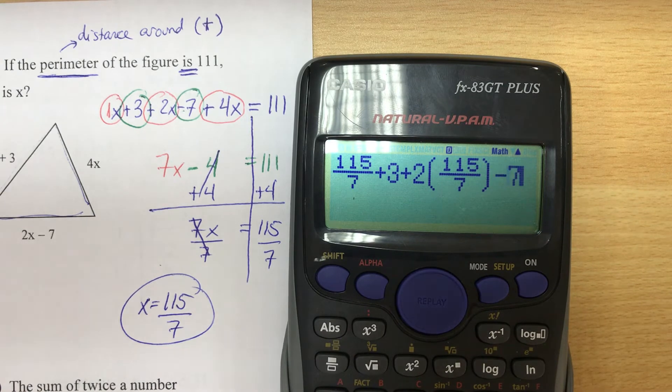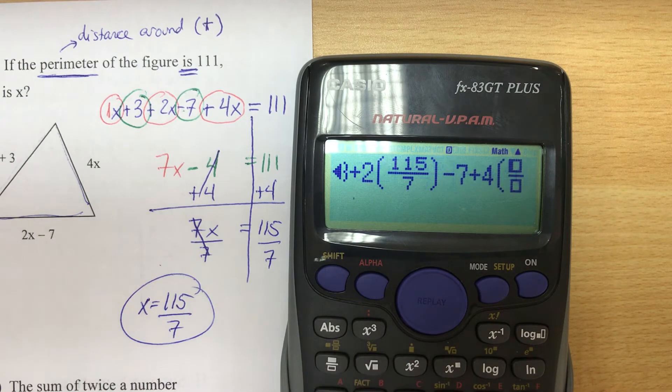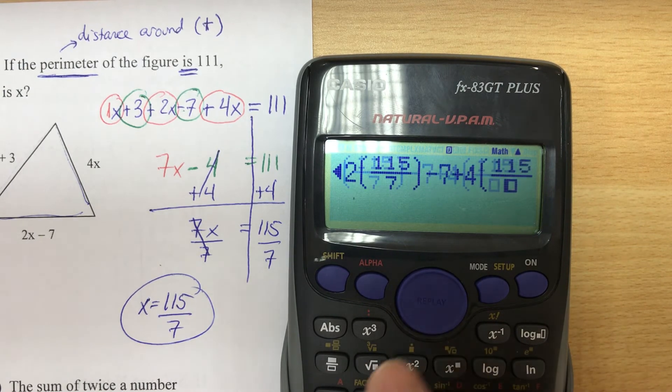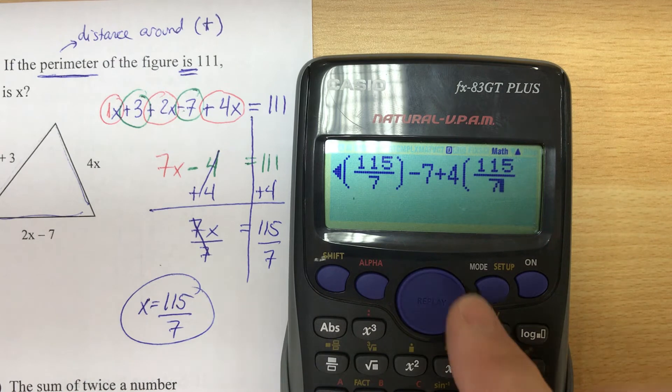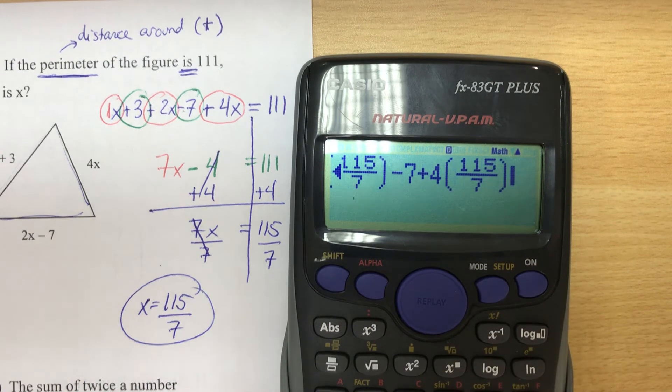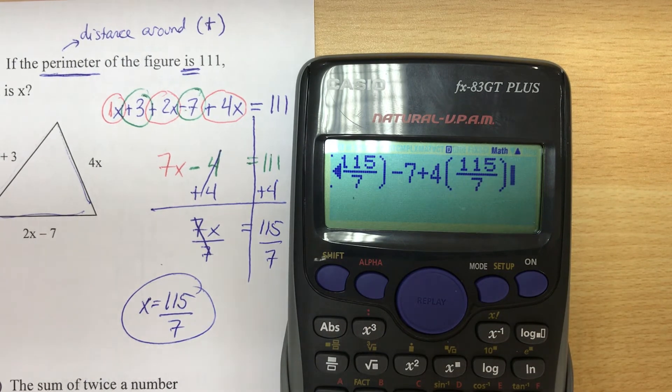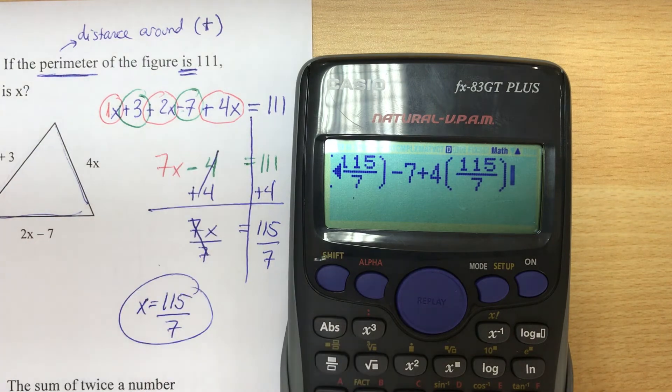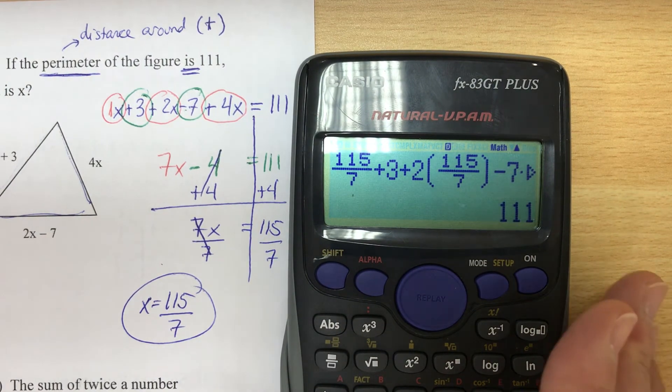And when you use the calculator, you also need to take your time and be very careful. Now this should give us a total distance of 111, and it does, so we're right.